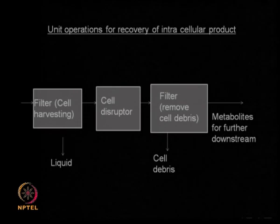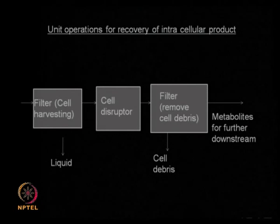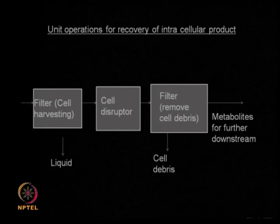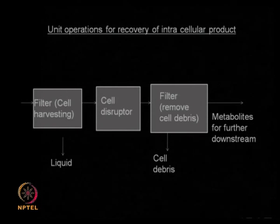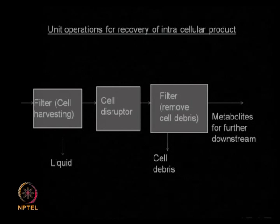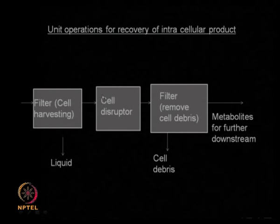If you want to perform a cell breakage operation — that means if you are interested in recovering an intracellular product — then you have extra downstream operations to perform. You need to collect all the cells, which is called cell harvesting, and then you need to resort to cell disruption.